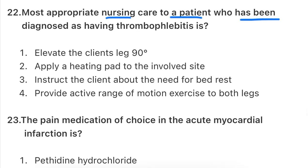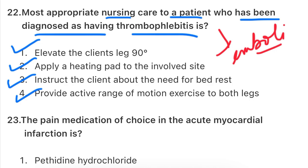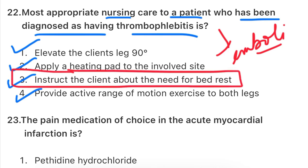Next question: the most appropriate nursing care for a patient diagnosed with thrombophlebitis is? Thrombophlebitis means thrombus formation in a vein along with inflammation. The options are: elevate the client's leg to 90 degrees, apply a heating pad to the involved site, instruct the client about the need for bed rest, or provide active range of motion exercise to both legs. In thrombophlebitis there is clot formation in the legs, and there is risk of embolus forming and traveling to the pulmonary area, causing cardiopulmonary arrest. Therefore, we tell the patient not to walk around and restrict movement so the thrombus does not move and cause an embolus. The correct answer is the third option - instruct the client about the need for bed rest.